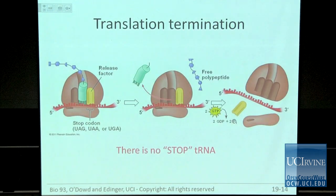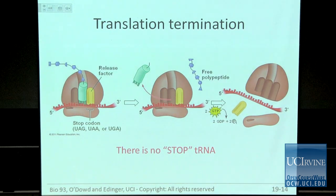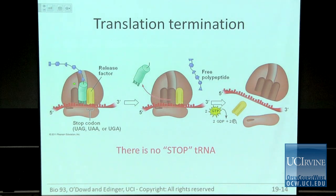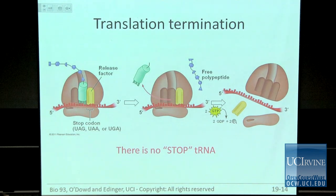The last stage is termination. When you reach a stop codon, you stop elongating. A protein release factor binds — there is no stop tRNA. This protein binds to the stop codon and hydrolyzes the aminoacyl bond, releasing the polypeptide. The tRNA and ribosome disassemble, which requires two molecules of GTP. Now you're done — you've made your protein and disassembled the ribosome.